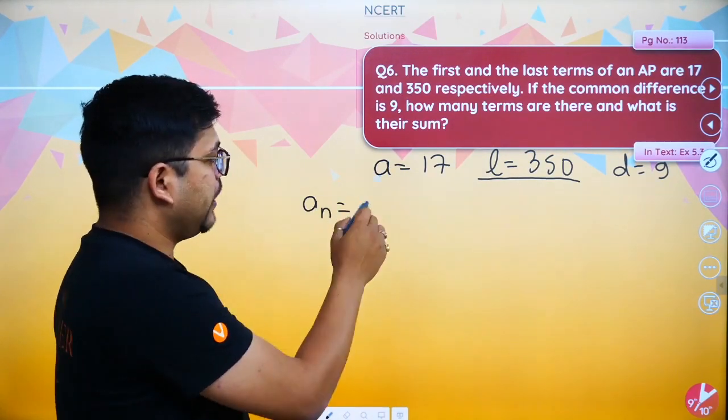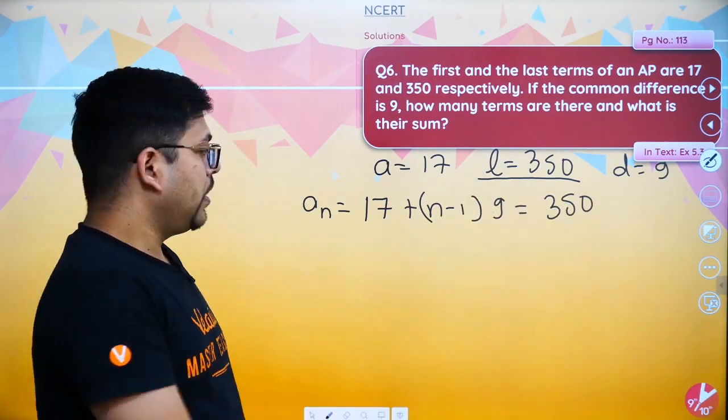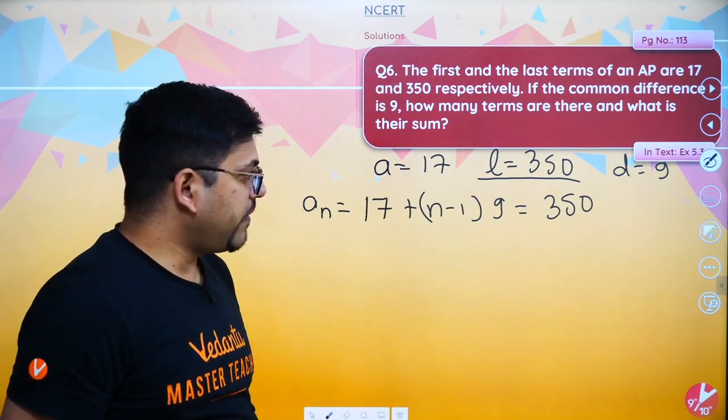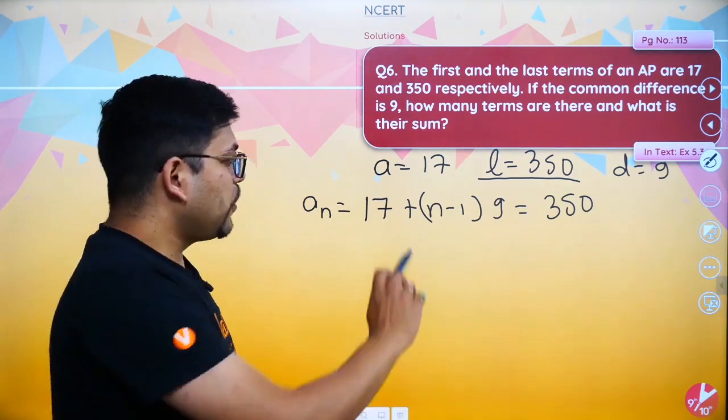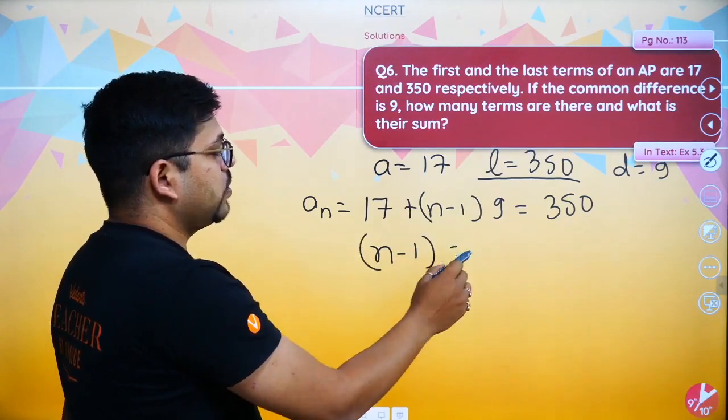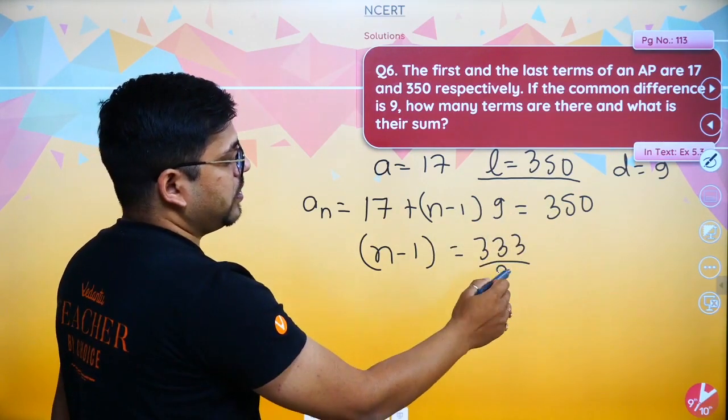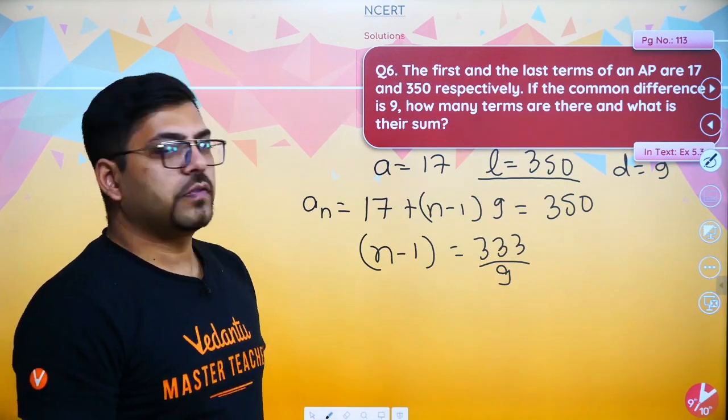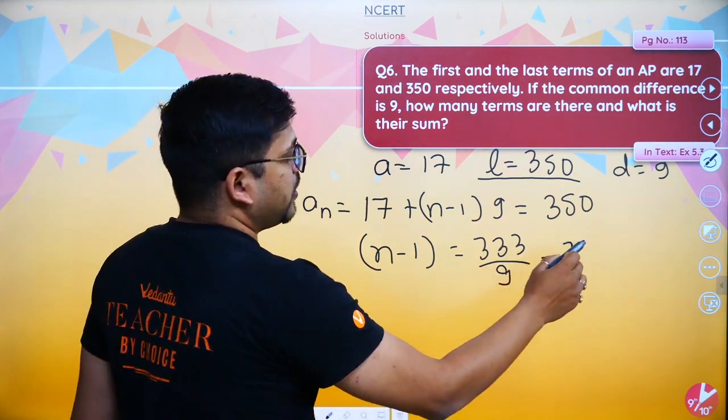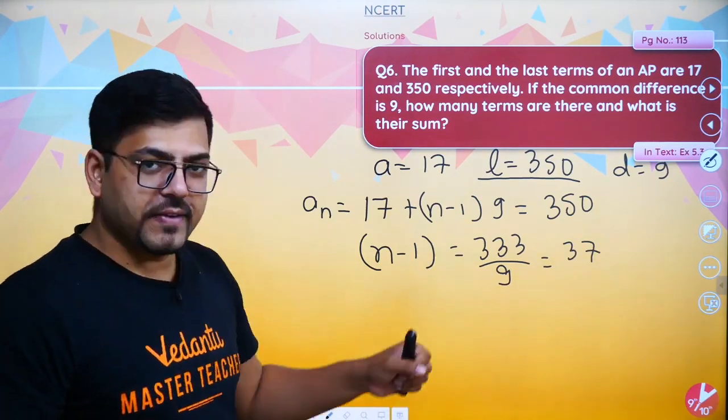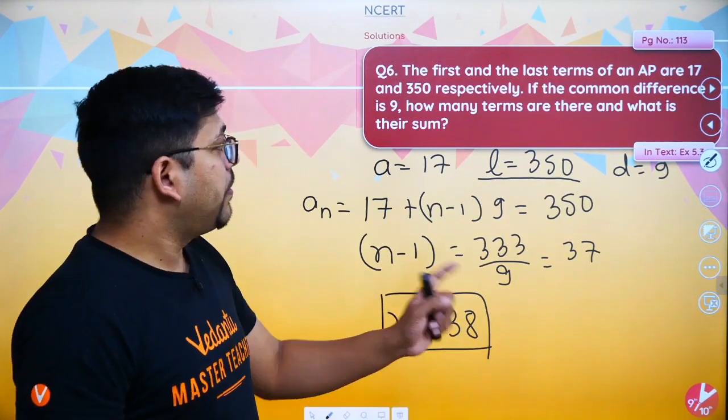A plus N minus 1 into common difference 9. This whole value is 350 because this is the last term. So 17 plus N minus 1 into 9 equals 350. Sending 17 to the other side, 350 minus 17 equals 333. So N minus 1 into 9 equals 333. Dividing by 9, N minus 1 equals 37. If I am not wrong, this gives N equals 38. Number of terms is 38.